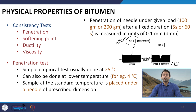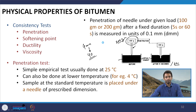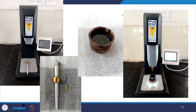We generally report penetration in decimillimeters. For example, if the needle has penetrated 4 mm, we report the penetration as 40. These images show a laboratory arrangement for the penetration test — the penetrometer, needle arrangement with weight, and the sample kept in the system during the test process.